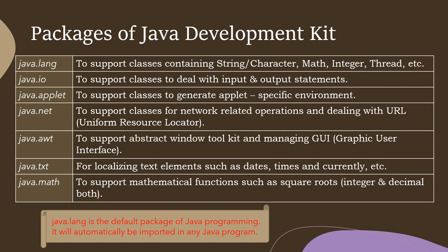Java.awt supports the Abstract Window Toolkit (AWT) for managing GUI interfaces. AWT is used for designing text boxes, message boxes, or buttons in the program. Normally a Java program runs as plain text, but if you want to design something graphically you need to use a graphical user interface, and the java.awt package helps include all of this in the program.